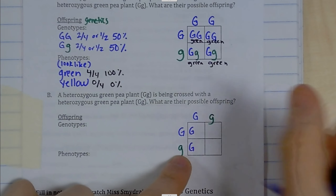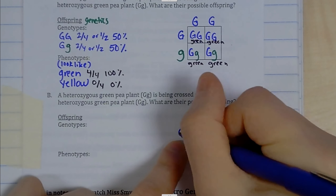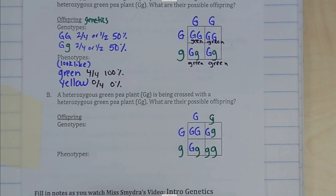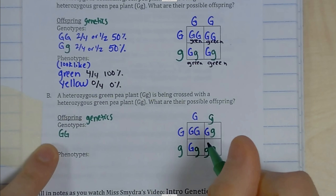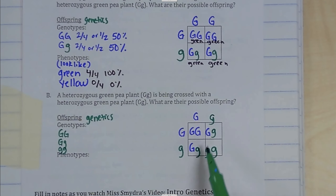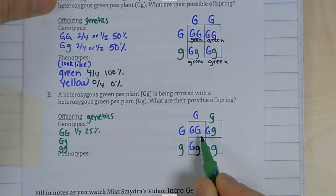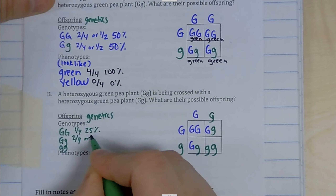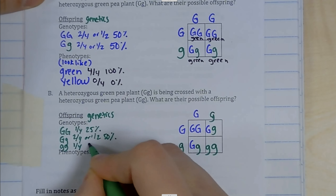We fill in our Punnett square going across to the side. Genotype is the genetics, so the genetic combinations we could have are big G big G, big G little g, or little g little g. Looking at the possibilities out of four: there's one out of four, or 25%, that are big G big G. How many big G little g's are there? Two, so two out of four, which is one half, 50%. How many little g little g's are there? One out of four, which is 25%.